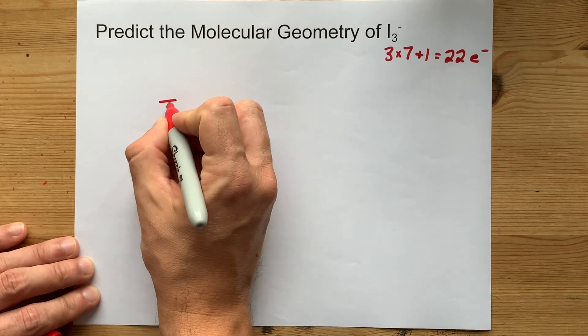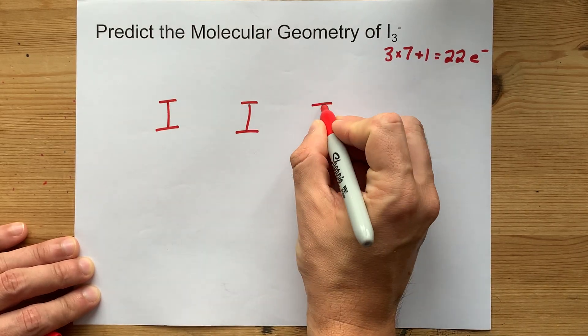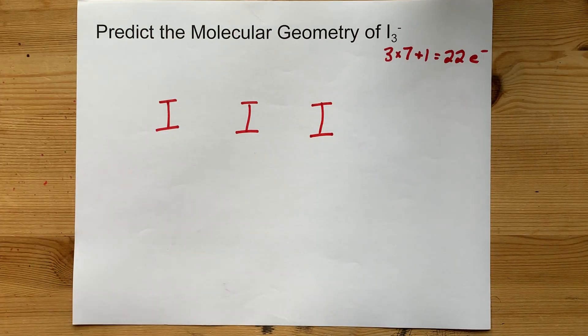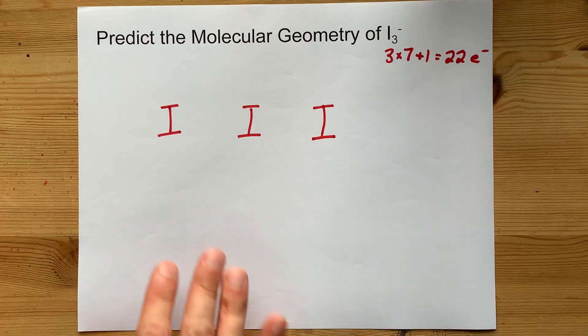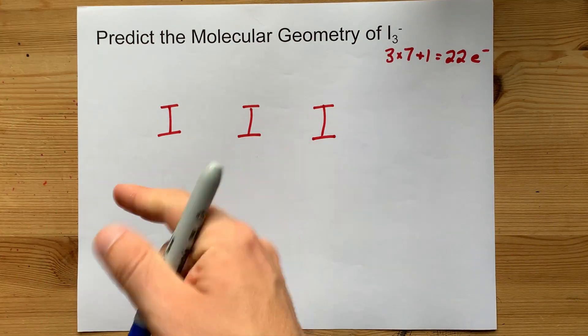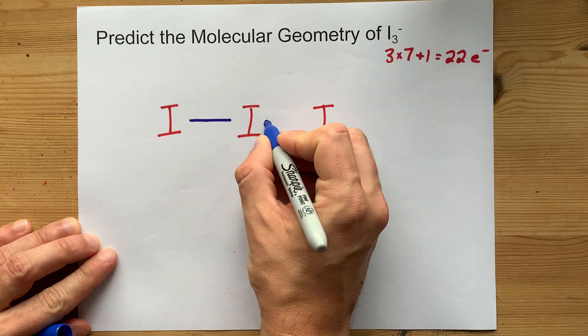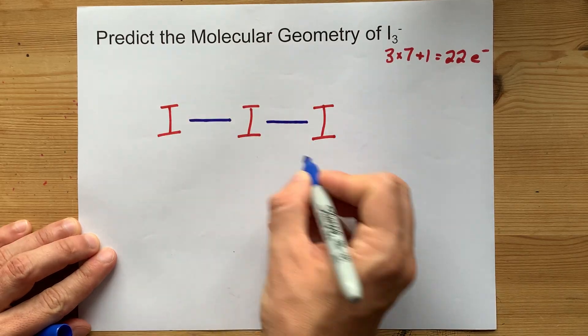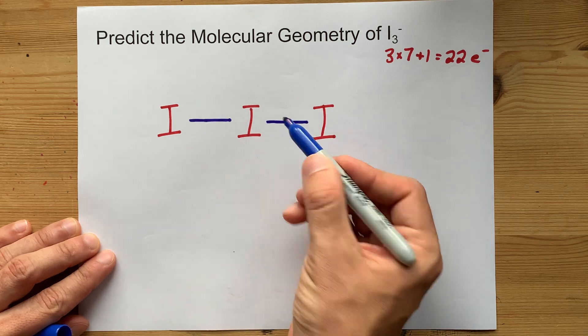I3- is going to be three I's in a row, and now we need to fill this out with the 22 valence electrons. I like to start with my bonding electrons. I create a bond between each of the outer atoms and the central atom. That accounts for 1, 2, 3, 4 electrons.